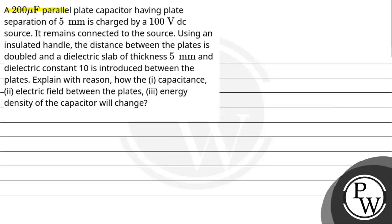Hello! Let's read this question. A 200µF parallel plate capacitor having plate separation of 5mm is charged by a 100V DC source. It remains connected to the source using an insulated handle. The distance between the plates is doubled and a dielectric slab of thickness 5mm and dielectric constant 10 is introduced between the plates. Explain with reason how the capacitance, electric field between the plates, and energy density of the capacitor will change.